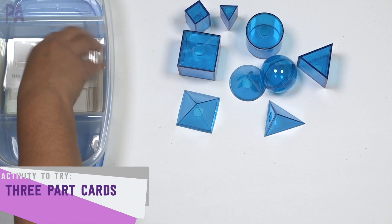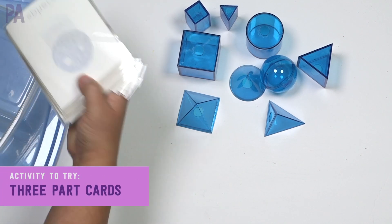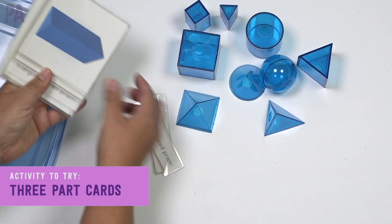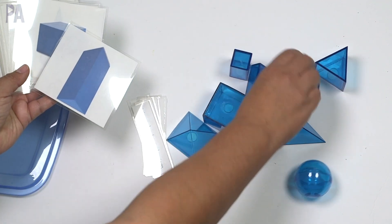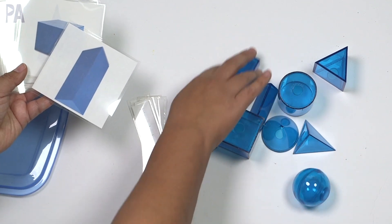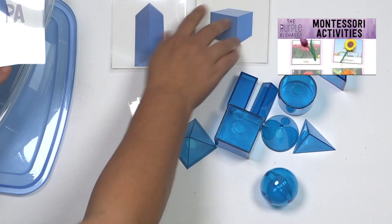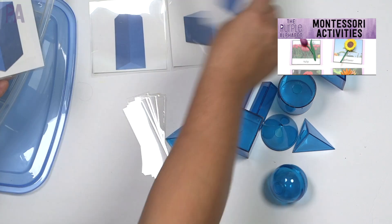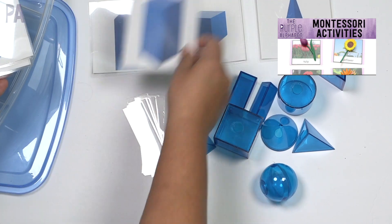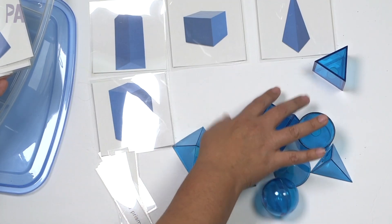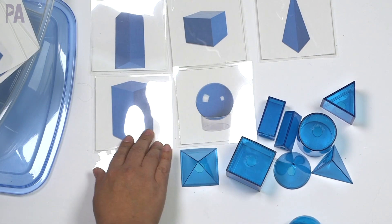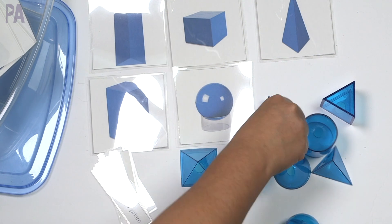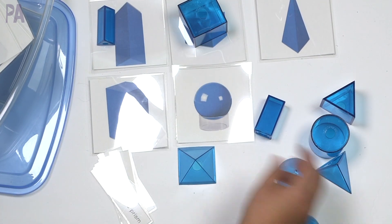This set of Montessori three-part cards can go with it. It was a free printable that I printed out and made where you can match the object to the card. I'm not going to go over how to do Montessori three-part cards as a lesson because I have a whole video on that. And so you can get the idea about how you would place these cards out and how you can match them up, the shapes to the card. So this is matching.